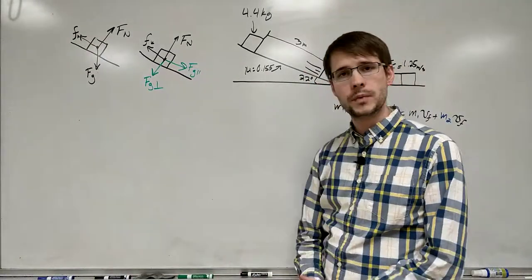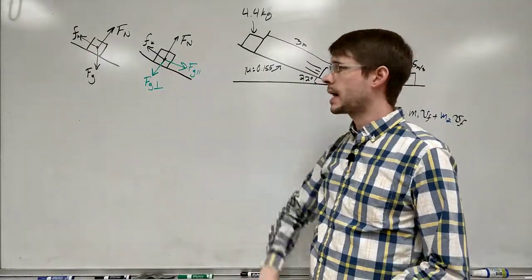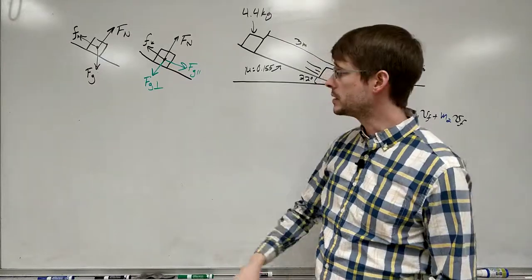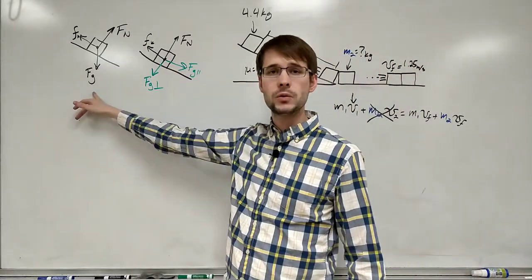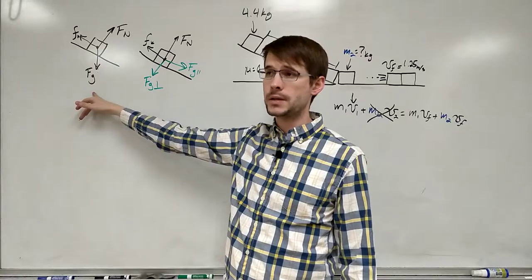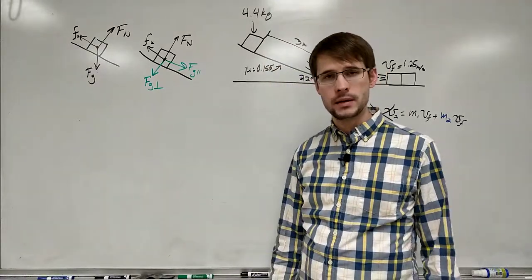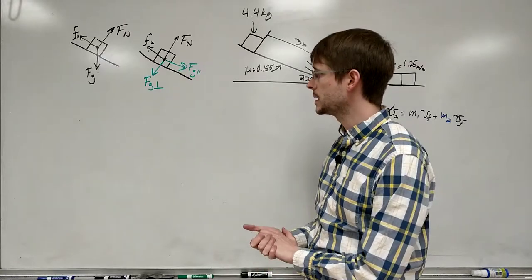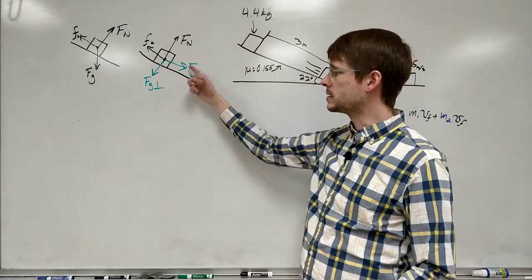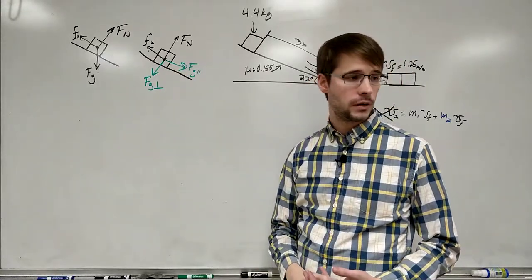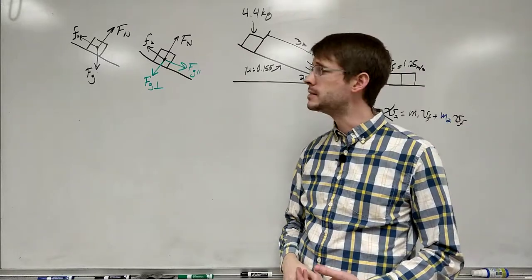Now we've got our components. So we're going to figure out what the values are for each of these. Fg is going to be equal to mg, the mass of the object, times the force of gravity. So that's 4.4 times 9.8, which comes out to be about 43 Newtons. And then we need to break this up into components further by using some SOHCAHTOA.